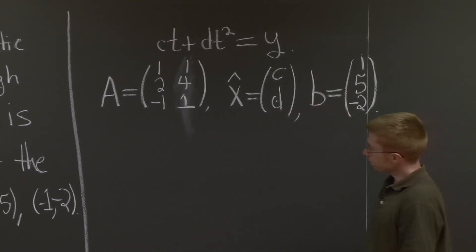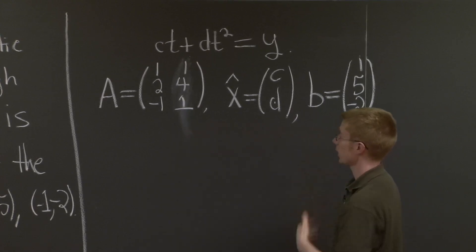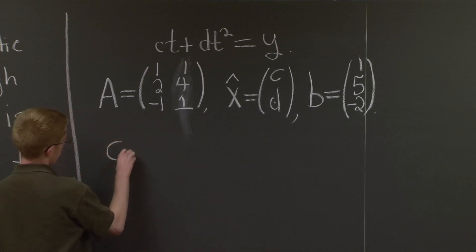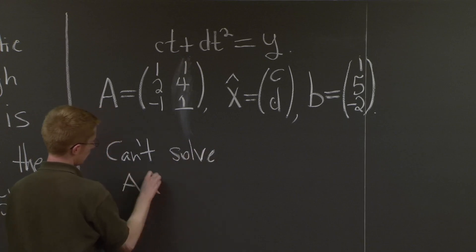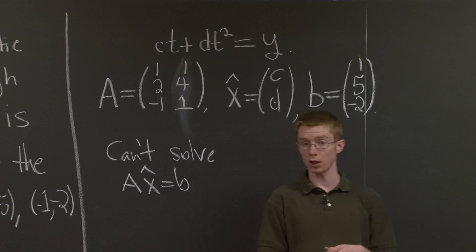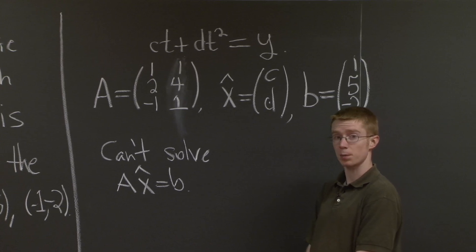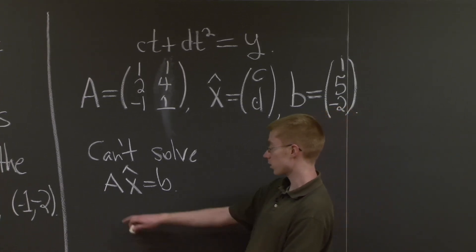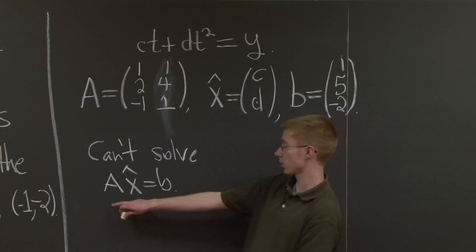So it would be great if we could solve Ax̂ = b. But we can't solve Ax̂ = b because there isn't a quadratic equation through the origin that contains these three points. But we need to find the best approximation to that. So that's the same as solving Ax̂ equals the projection of b onto the column space of A.